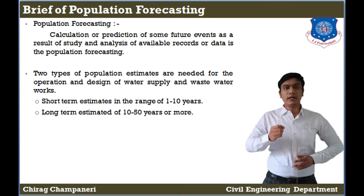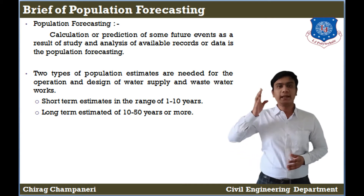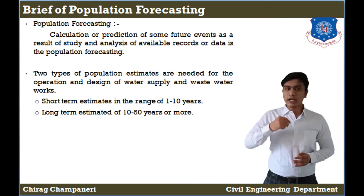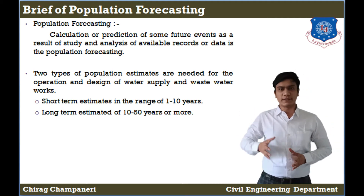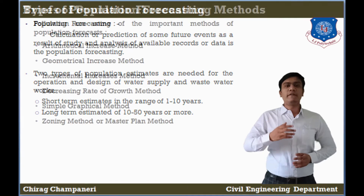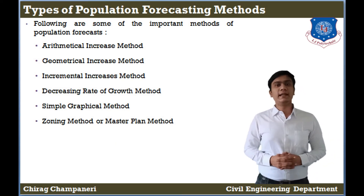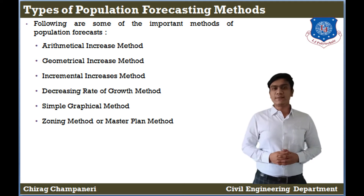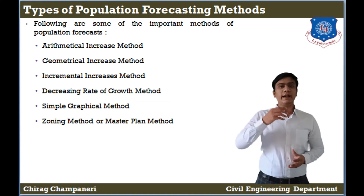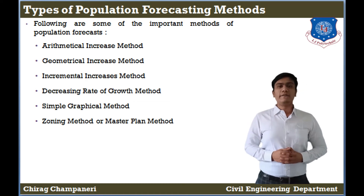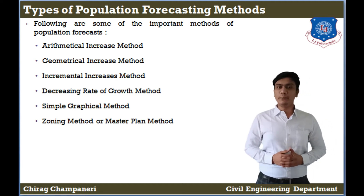So we will see a few types of population forecasting methods. These include the Incremental Increase Method, Decreasing Rate of Growth Method, Simple Graphical Method, and the Zoning Method.